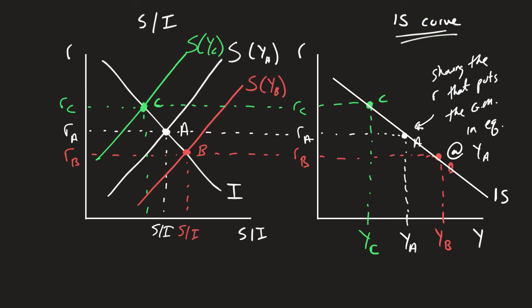The IS curve is created by looking at the relationship between output and the real interest rate — it is downward sloping. Shifts in this IS curve are going to depend on savings and investment, and we'll get to that later in this lesson. But this was just about creating the IS curve and how it's related back to the goods market.